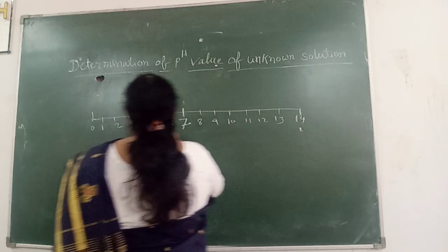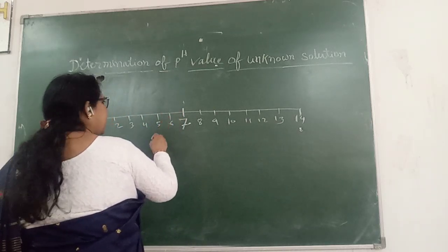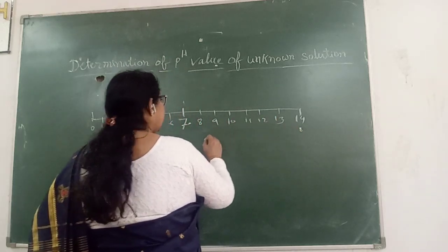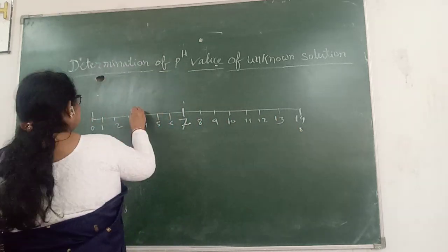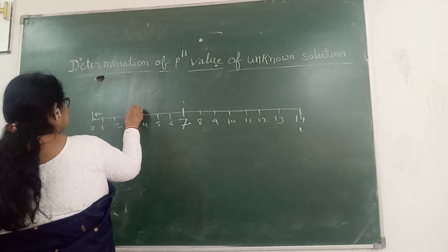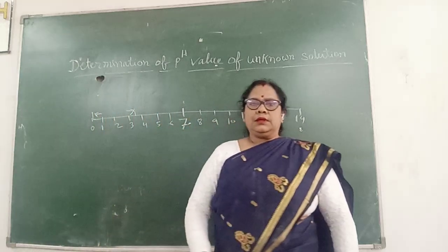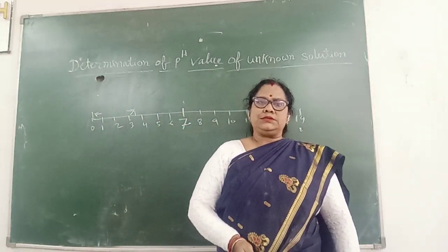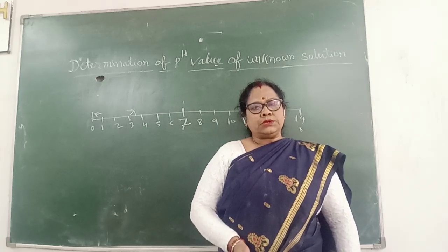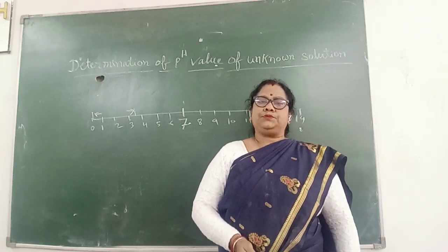A pH value of 0 to 6 means the substance is acidic, and 8 to 14 means the substance is basic. An acidic solution means there is a higher concentration of hydrogen ions present, and a basic solution means there is a higher concentration of OH minus ions present.